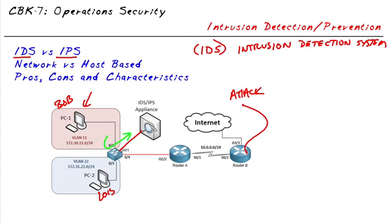So we're getting copies of that data. When our IDS appliance sees malicious traffic, it can send off an alert. However, because it's just a copy of that data, the IDS appliance isn't really in the middle of it — it can't stop the attack. That's why IDS is referred to as intrusion detection: it has the ability to see the traffic and fire off an alert, but it can't stop it because it's not inline.